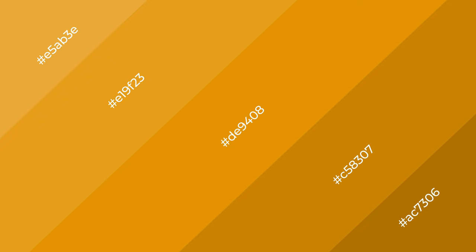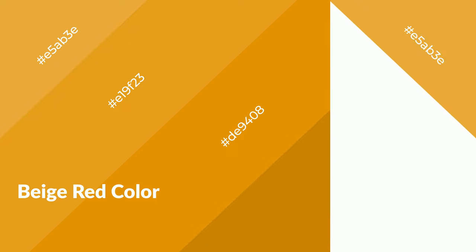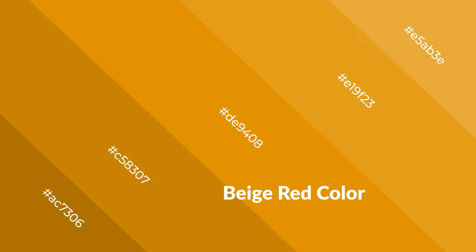Beige-red is a warm color and it emits cozier and active emotions. Warm colors are symbols of warmth, fire, heat, and sunshine. It also evokes joy, passion, love, and even anger. You can see them used in restaurants and gyms.